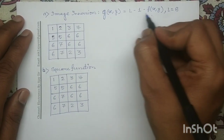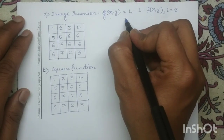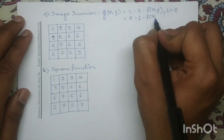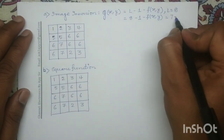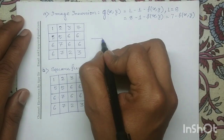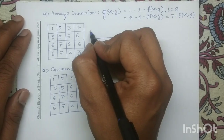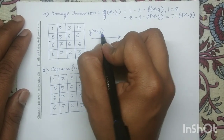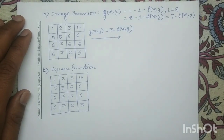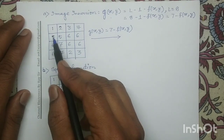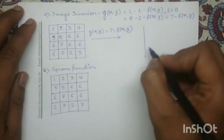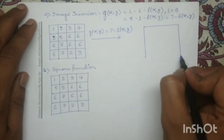So in this question L is equal to 8. If we substitute L equals 8 in this equation, g(x,y) becomes 8 minus 1 minus f(x,y), which reduces to 7 minus f(x,y). So on this given input digital image we will apply the transformation equation g(x,y) equals 7 minus f(x,y). Since the dimension of the input image is 4×4, the output image also has dimension 4×4.